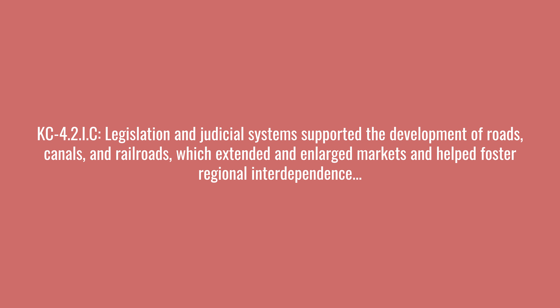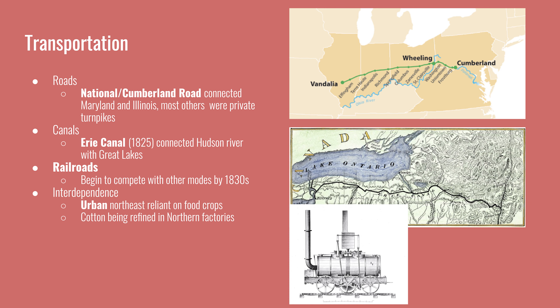The next key concept deals with the forms of transportation used to get goods to market. Legislation and the judicial system supported the development of roads, canals, and railroads, which extended markets and fostered regional interdependence. The National Road, also called the Cumberland Road, linked Maryland to Illinois. Unlike other roads of the time, which were private turnpikes or toll roads, this was a public road. At the time, it was not considered an acceptable role for the federal government to pay for roads across different states.